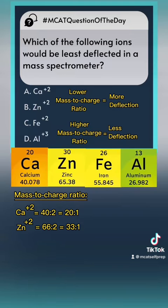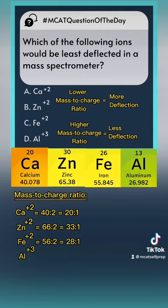Next, iron's mass-to-charge ratio will be 56 to 2, or 28 to 1. Finally, we have aluminum with a charge of 3 and a mass of 27, so its mass-to-charge ratio will be 27 to 3, giving us 9 to 1.